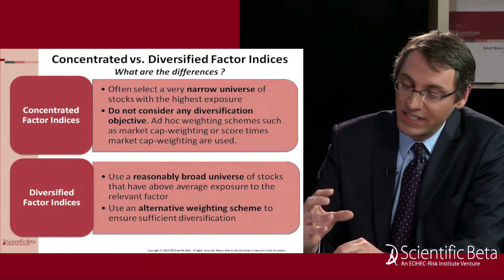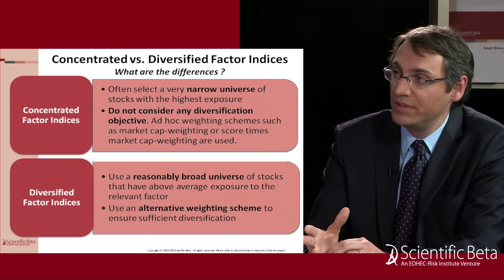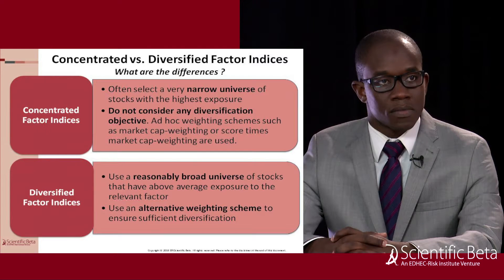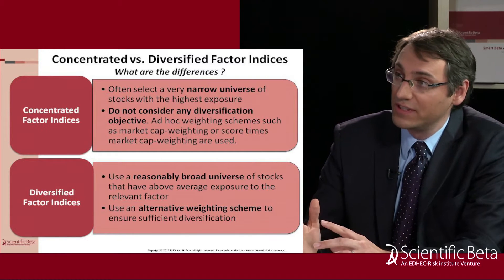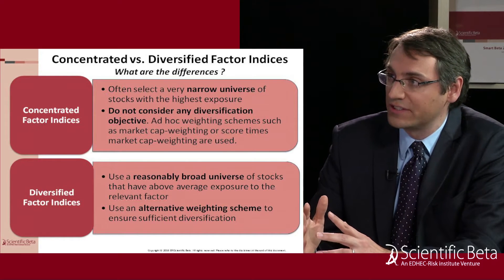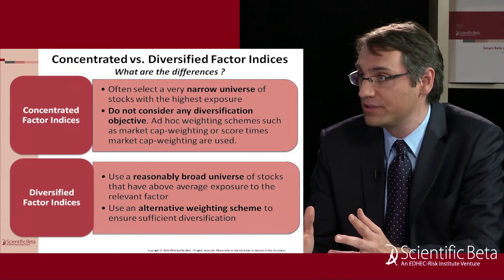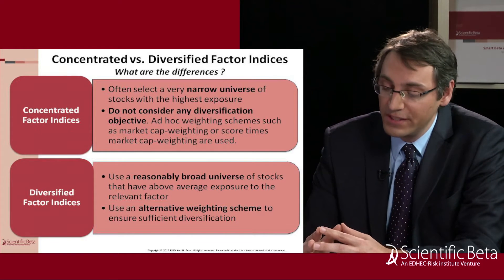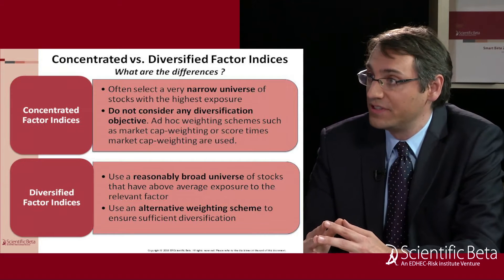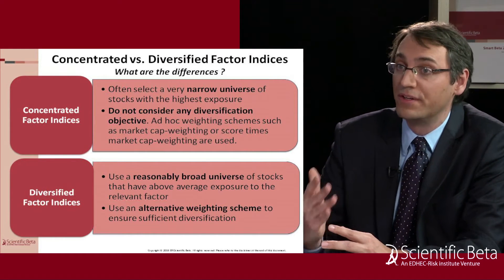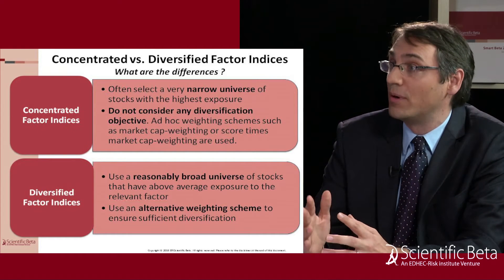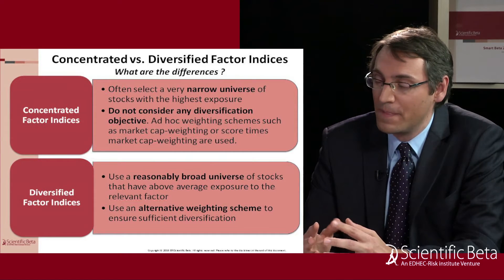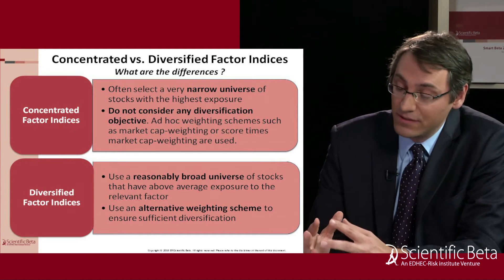Relative to a broad cap-weighted index, you're typically going to use stock selection to select the right stocks with the right factor tilts, and you may also use a weighting scheme that will be different from simple cap weighting. There's this objective of obtaining a factor tilt, and if you look at how these tilts are implemented in the industry, there are two very different approaches. First, concentrated indices typically have a relatively narrow stock selection — selecting only the top quintile or top decile stocks, or perhaps a fixed number like the top 50 or top 100 stocks with the highest factor score.